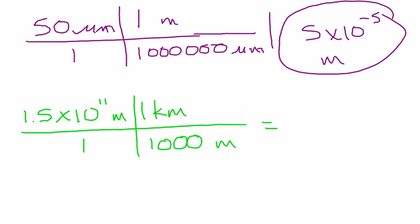Equals 1.5 times 10 to the negative 11th divided by 1,000. And that gives us 1.5 times 10 to the 8th, I believe. Yes, times 10 to the 8th. Sorry, my calculator was messing up on me there. 1.5 times 10 to the 8th kilometers.